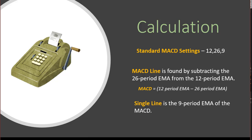MACD is something a lot of folks don't quite understand how it's put together. The standard MACD settings are 12, 26, 9. The 12 is a 12-period exponential moving average. An exponential moving average, instead of just averaging the last 12 days equally, actually weights the most recent data more than past data, so it's a little bit more responsive to current price action than a simple moving average. The MACD line is found by subtracting the 26-period EMA from the 12-period EMA — it's just a math equation.